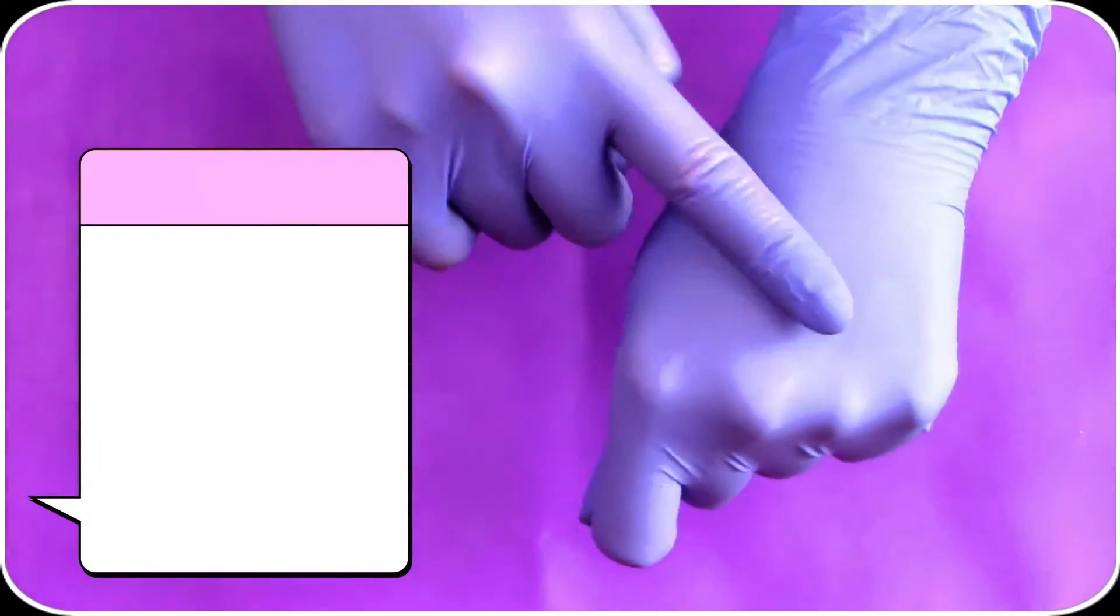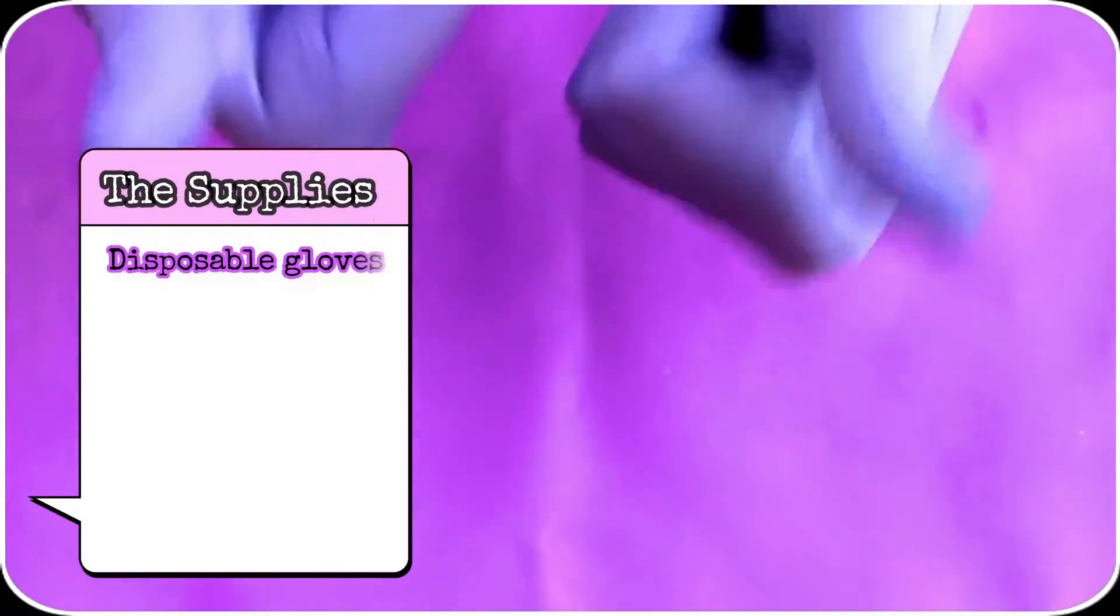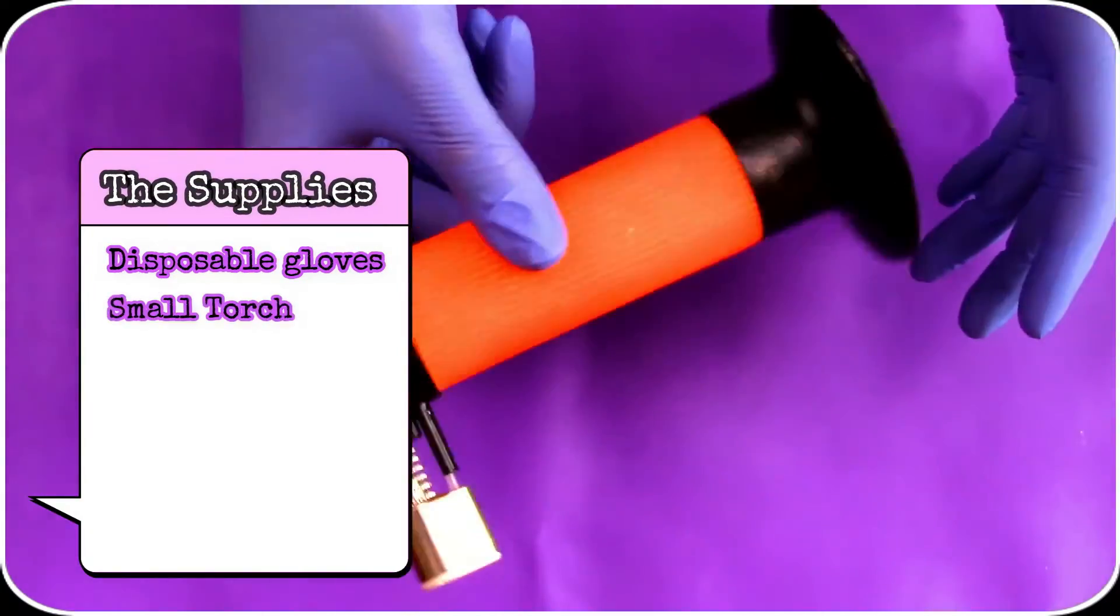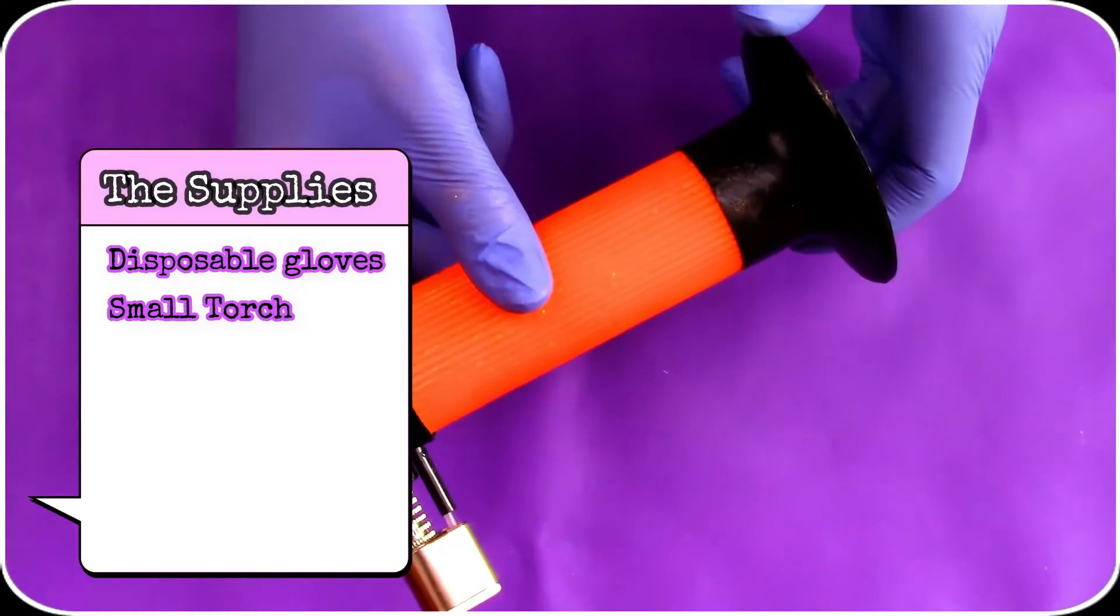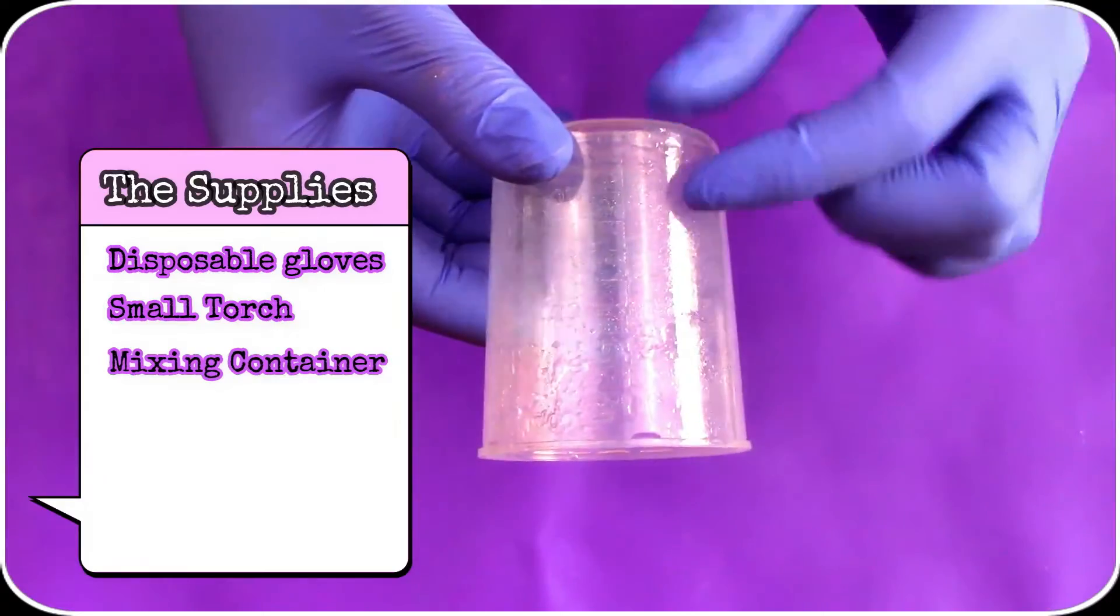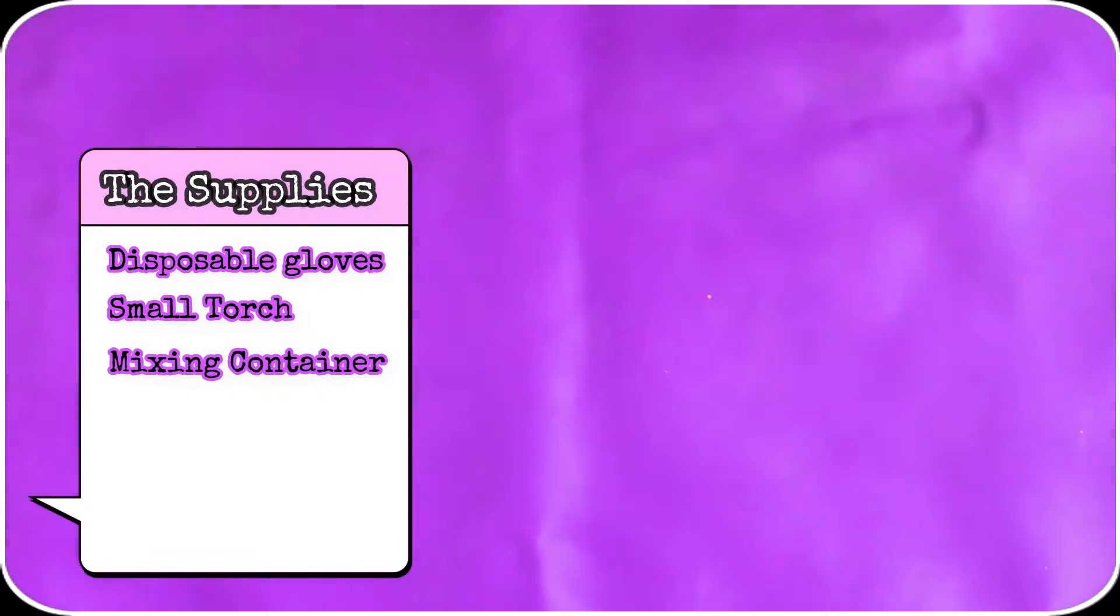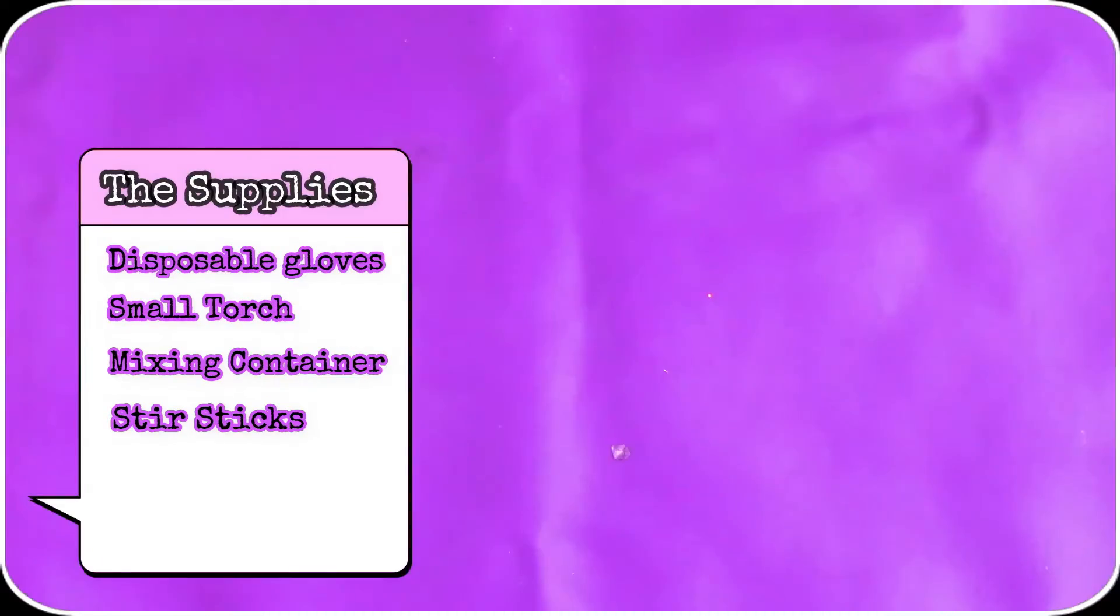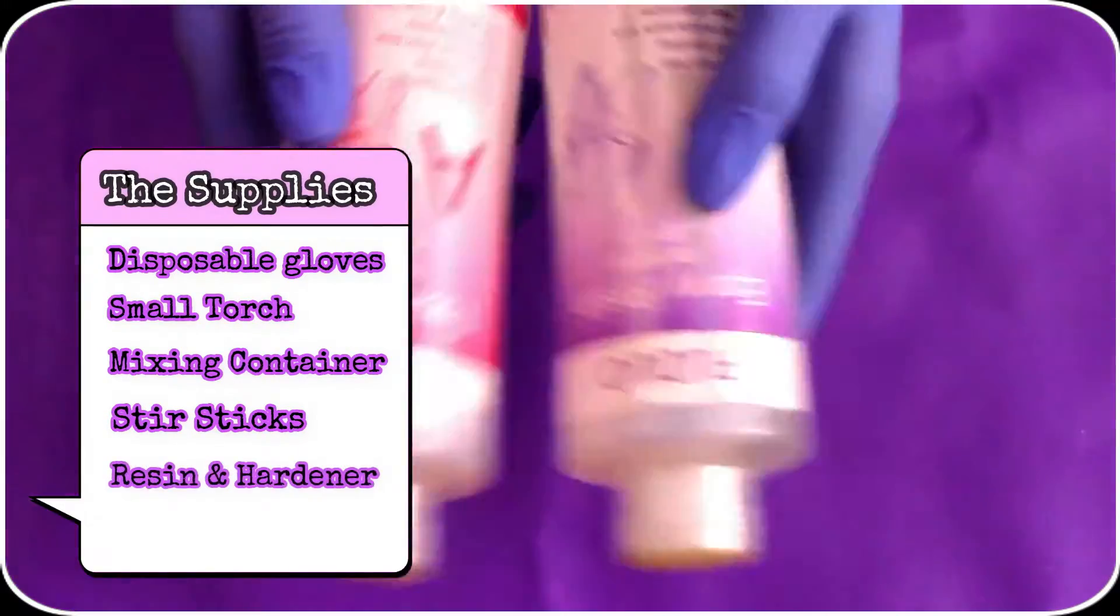First off protect your hands with some disposable gloves. Then you'll need a torch for those bubbles. Then a mixing container with measures on the side. Some stir sticks. Of course the resin and hardener.